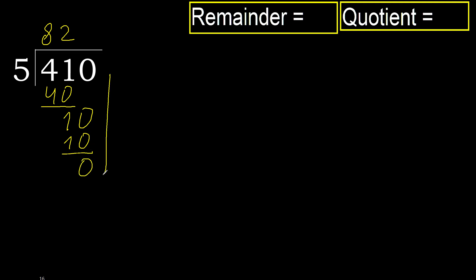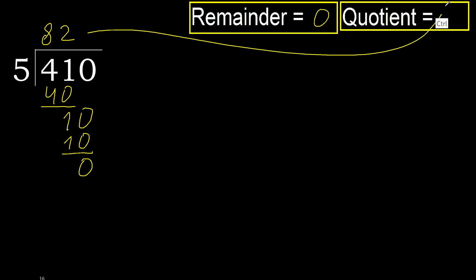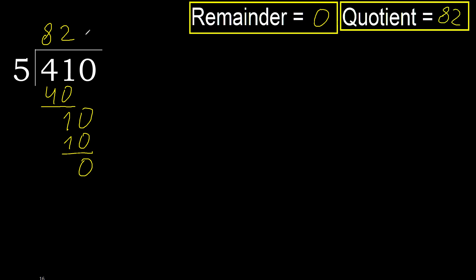Next — there is no next number, therefore finish it. 410 divided by 5 is 82. OK.